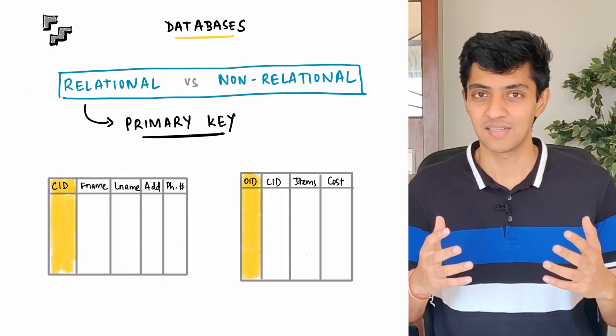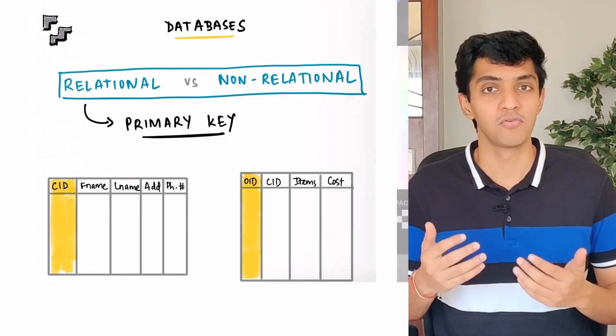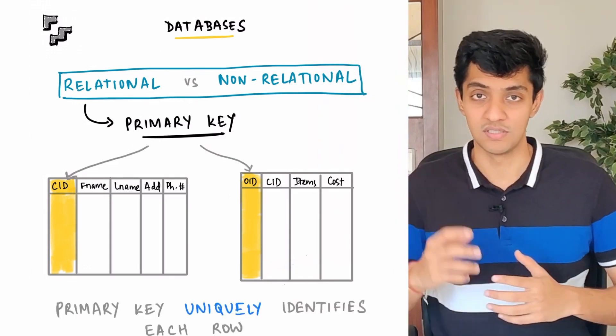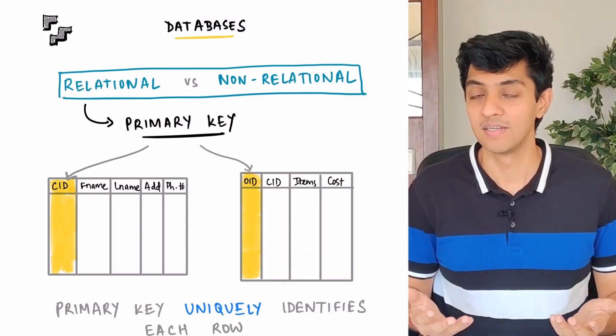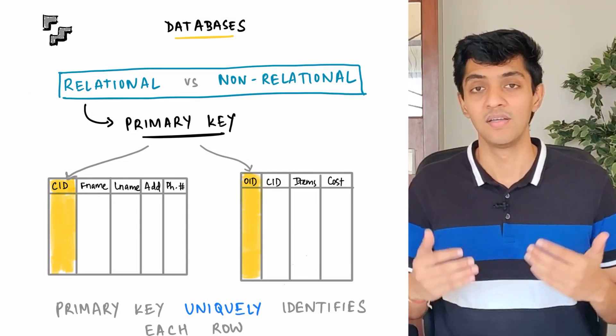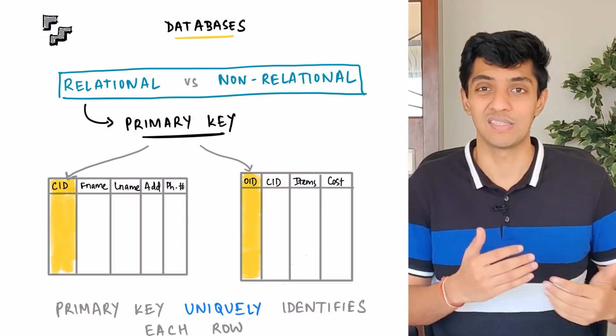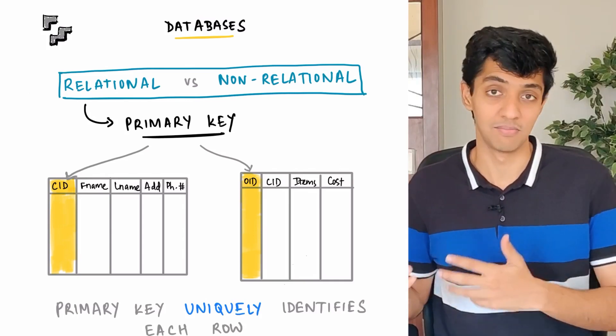For example, imagine you want to extract the customer information for a customer named John. Now if you didn't have a unique customer ID and let's say you had two customers by the name John, then you don't really know which information you need to pick. The same applies to updating the data. If you want to update the address of a customer who's named John, but then you don't have the customer ID or the customer ID is not unique, then you don't know which record to actually update.